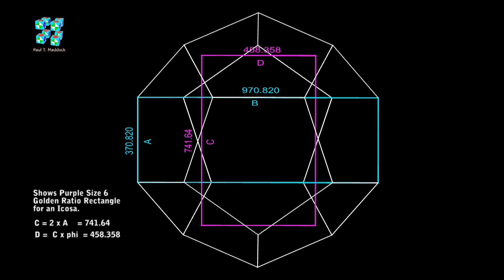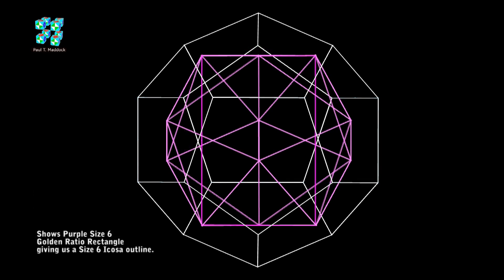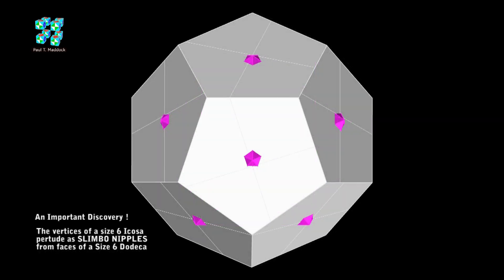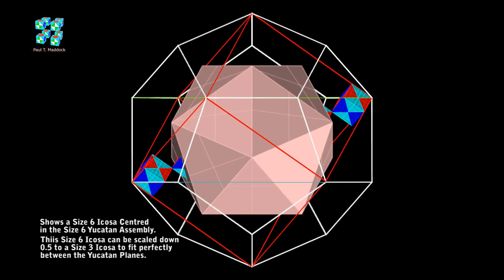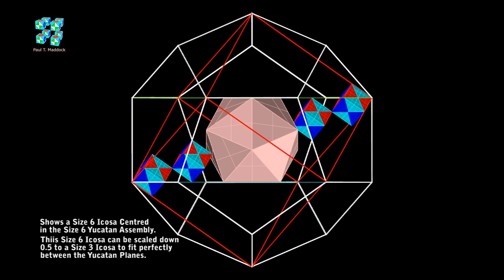Now we can turn this rectangle into a size 6 icossa. I've got something else important to show you about these two — the Dodeca and icossa. I'm going to show you this pair as solids. You can see that the vertices of the icossa stick out a little bit from the faces of the Dodeca. I call this a slimbo gap or a slimbo nipple, but I guess nobody mentions it because it's not in the book. We'll hide the Dodeca and go back to the Yucatan assembly and just show the size 6 icossa. Now look what happens when I scale down the size 6 by 0.5 — it turns perfectly into a size 3 and fits between the Yucatans.